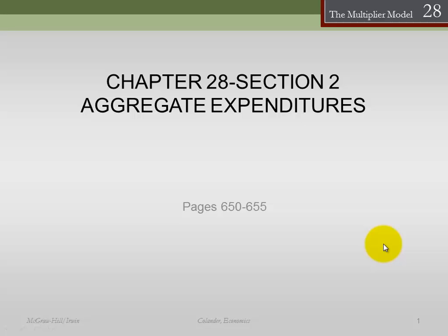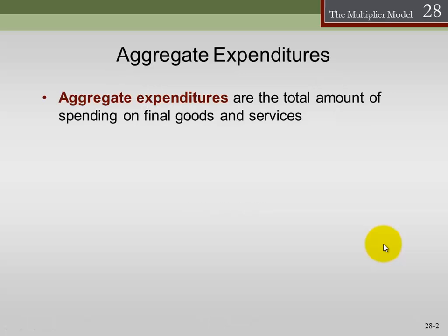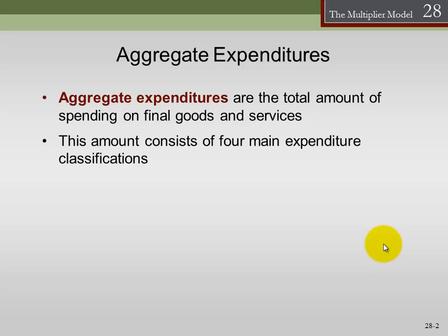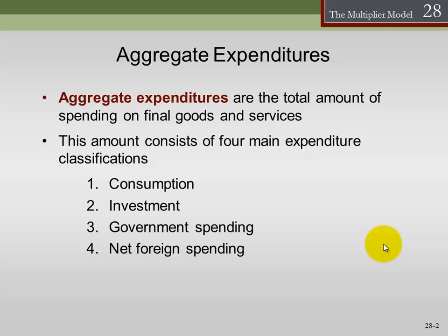Chapter 28, Section 2. Aggregate expenditure are the total amounts of spending on final goods and services. This amount consists of four main components or classifications: consumption, investment, government spending, and net foreign spending.